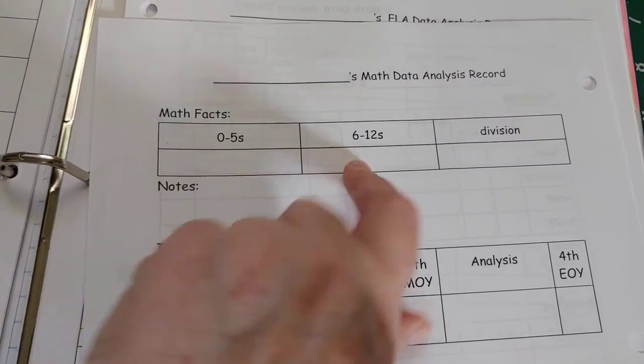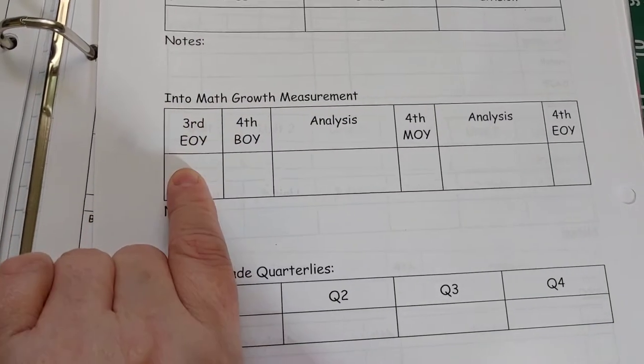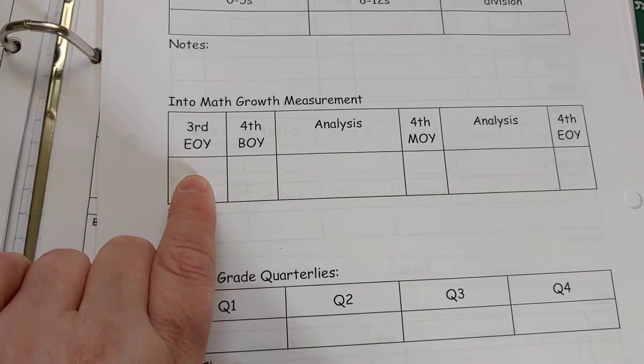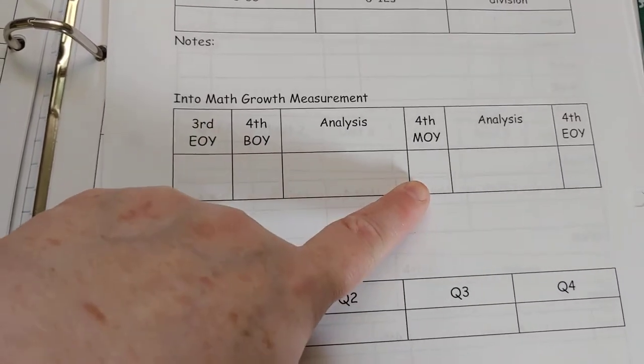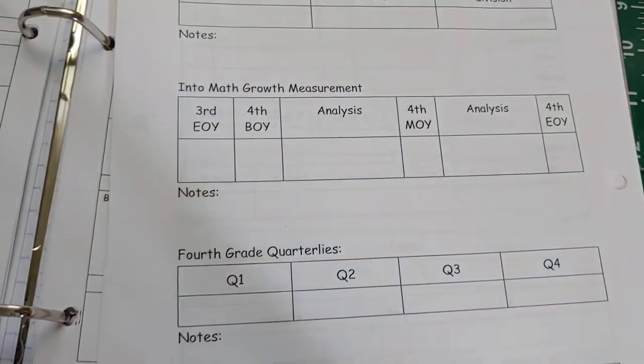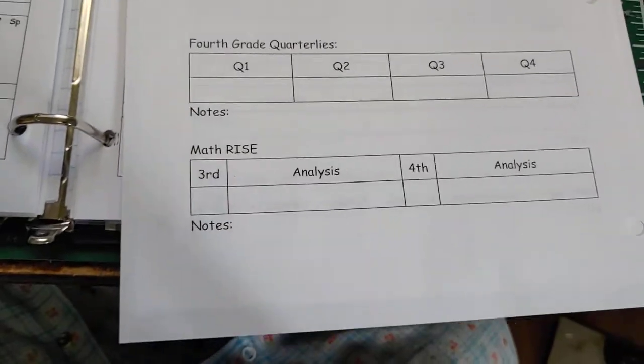On the back we've got our three different math benchmarks for multiplication facts 0-5, 6-12, and then division facts. We use the Into Math program and it has a growth measurement, so again I look at the end of year in third grade and then our beginning of the year and middle of the year and then end of year in fourth grade, and then we have quarterly math assessments and then of course our math high-stakes testing.